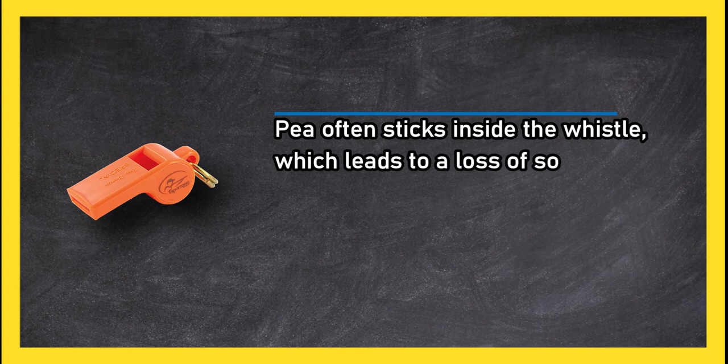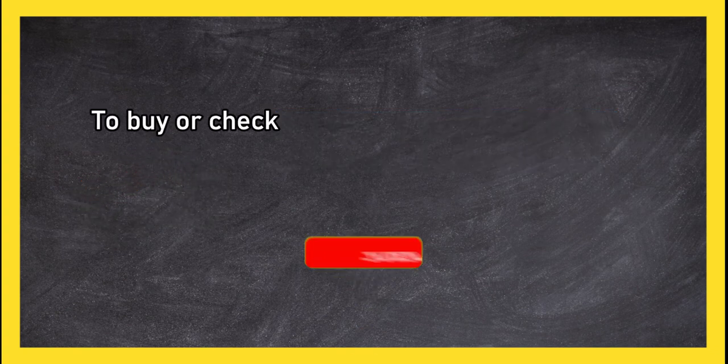Pea often sticks inside the whistle which leads to a loss of sound.